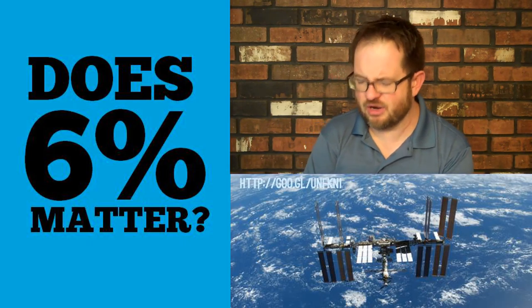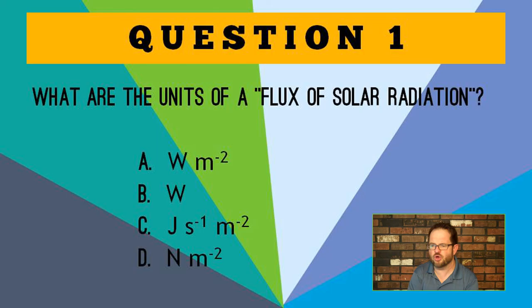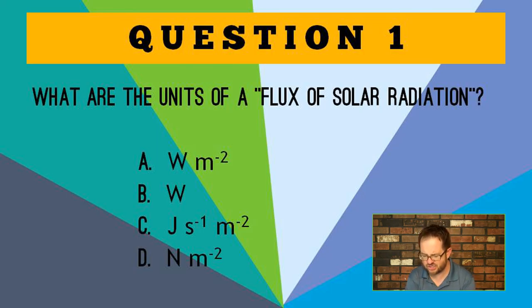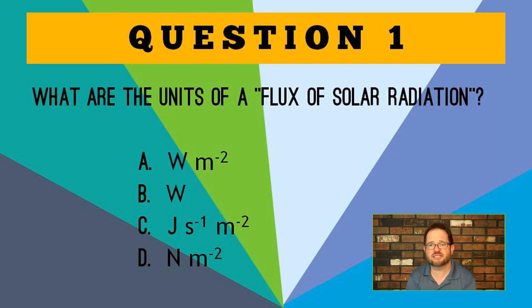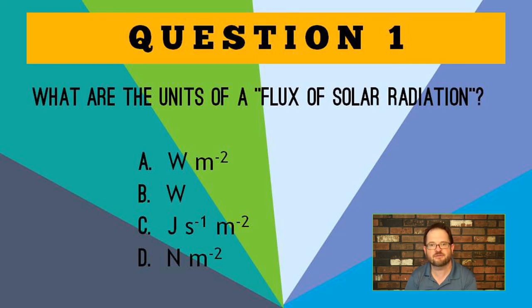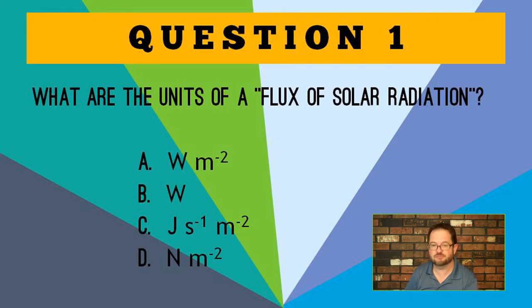Before moving to the next video, here's a question: what are the units of a flux of solar radiation? The four choices are: A — watts per square meter; B — watts; C — joules per second per square meter; D — newtons per square meter. Choose one of the four alternatives to get feedback about your answer before moving on to the next question.